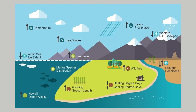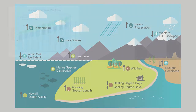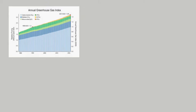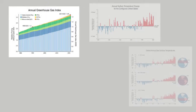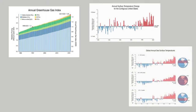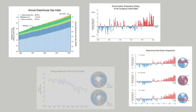Climate indicators show trends over time in key aspects of our environment, including greenhouse gas levels in the atmosphere, temperatures across land and sea, and extent of Arctic sea ice.